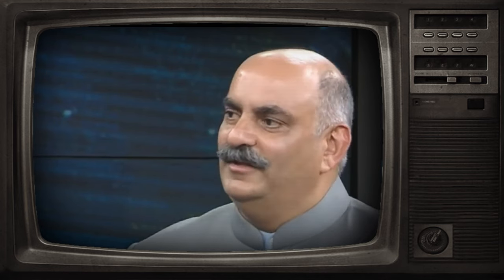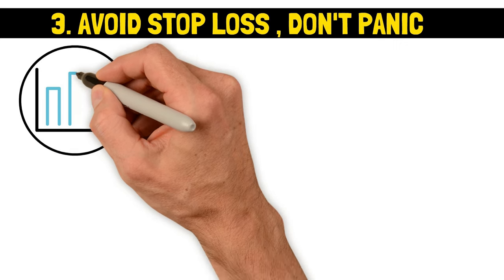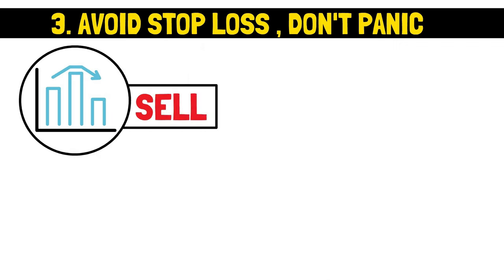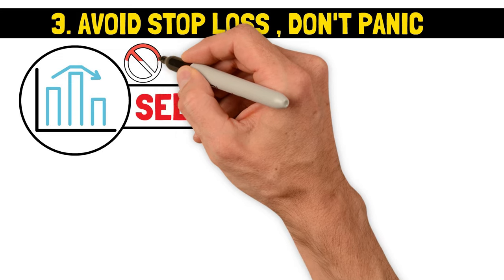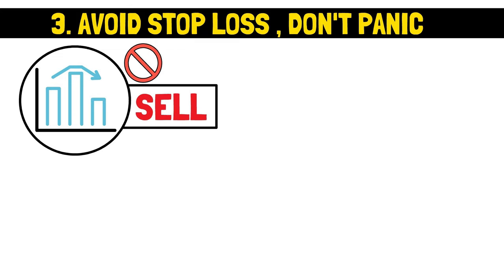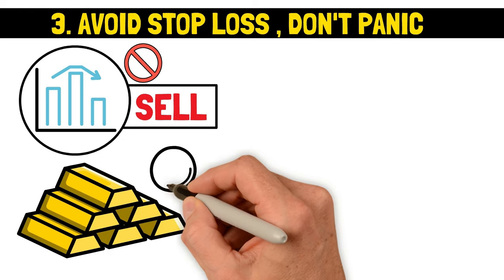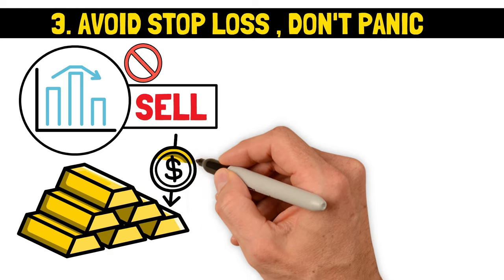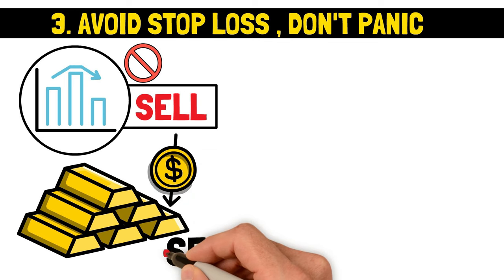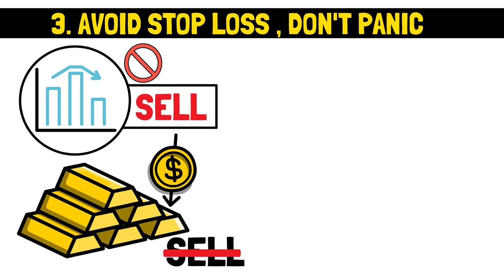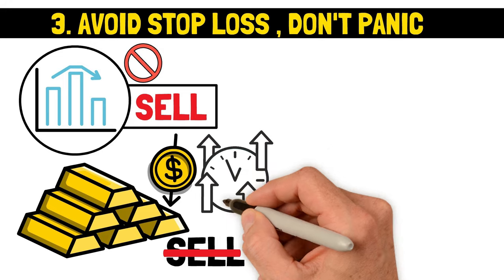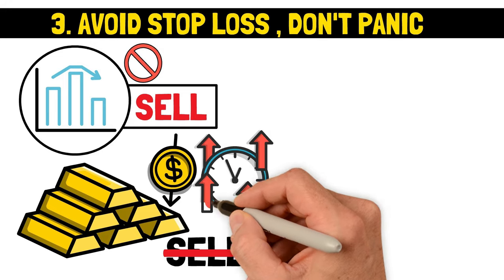It would have made no sense for me to put a stop-loss at 30 or 35 or 40 because I thought it was worth a lot more. Stop-loss is an order to sell a stock when it drops to a certain price, intended to limit an investor's loss. But Pabrai argues that this approach doesn't make sense for long-term investors. Imagine you bought gold for a fair price and intended to hold it for the long term. If the price dropped slightly after a few months, you wouldn't rush to sell it at a loss, right? You'd hold on because you believe in its long-term value.